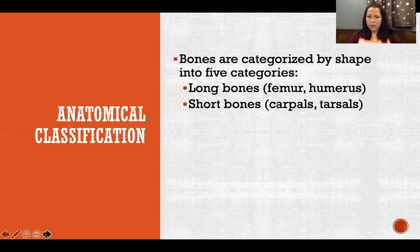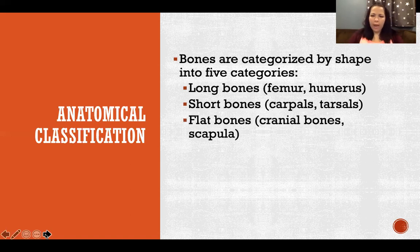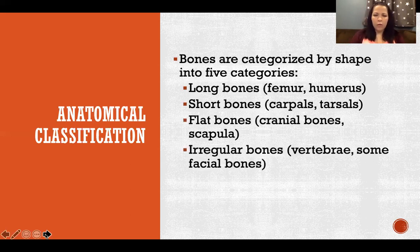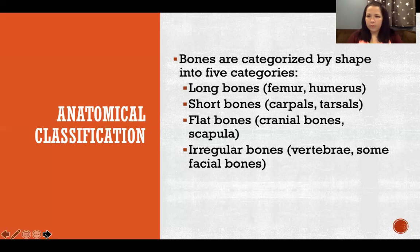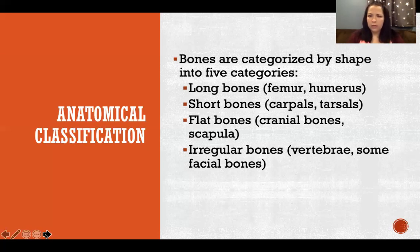Short bones are like the carpals and tarsals, which are more cube-shaped. Flat bones would be like the cranial bones and the scapula. Irregular bones are all the oddball bones of various shapes — that's vertebrae and some facial bones. We have 14 bones in the face and some of them are very strangely shaped, so those are the irregular bones.